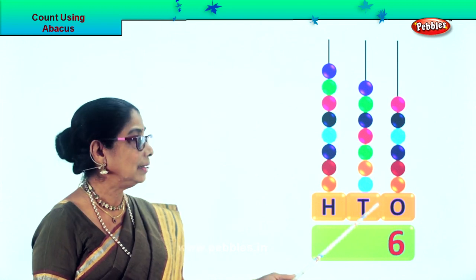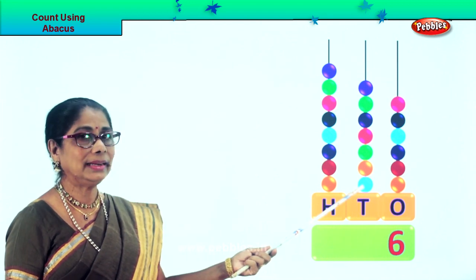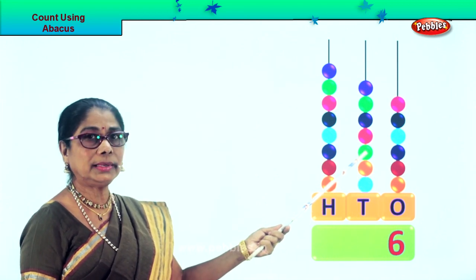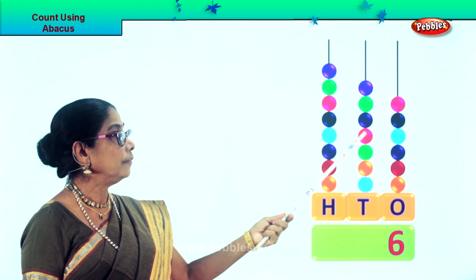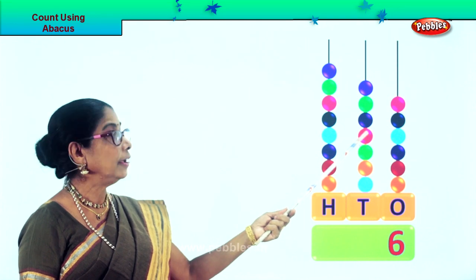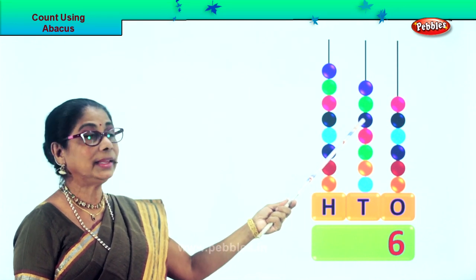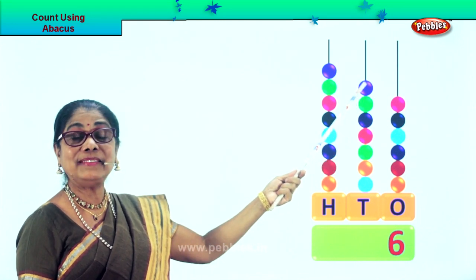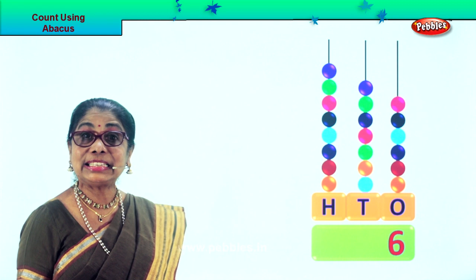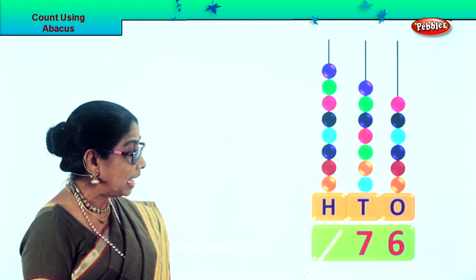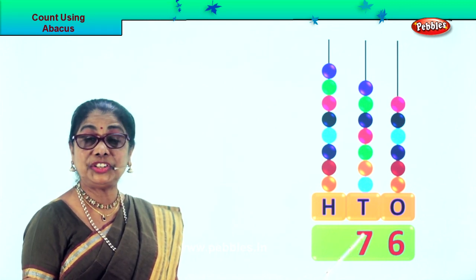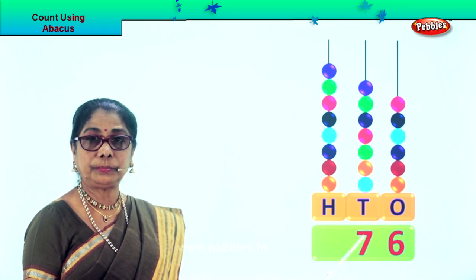Now we go to the 10s place. Count in 10: 10, 20, 30, 40, 50, 60, 70. There are 7 beats and that is 70.